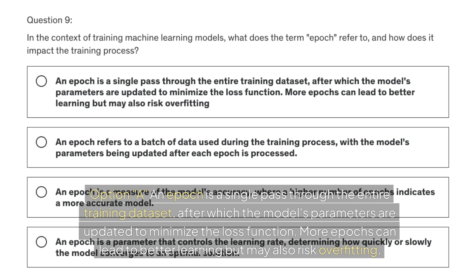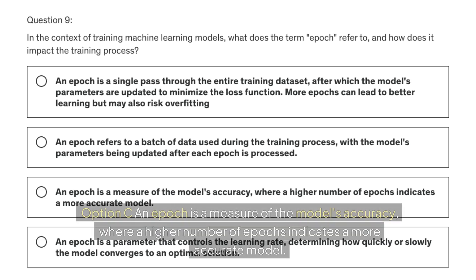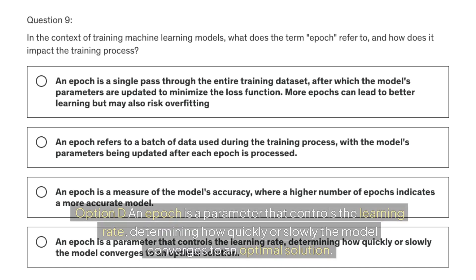More epochs can lead to better learning but may also risk overfitting. Option B: an epoch refers to a batch of data used during the training process, with the model's parameters being updated after each epoch is processed. Option C: an epoch is a measure of the model's accuracy, where a higher number of epochs indicates a more accurate model. Option D: an epoch is a parameter that controls the learning rate, determining how quickly or slowly the model converges to an optimal solution.